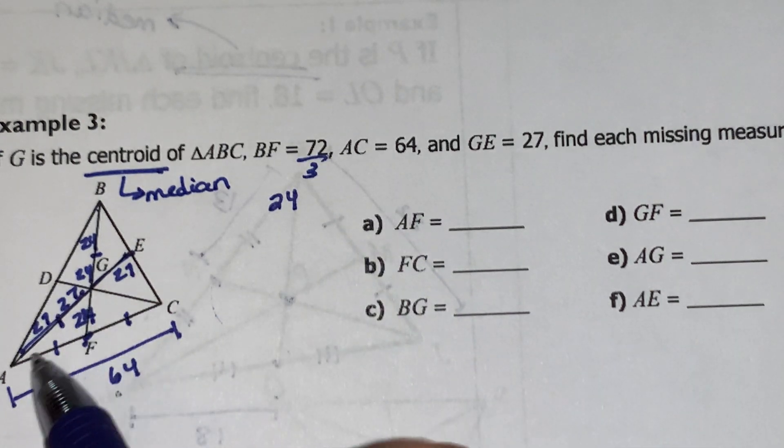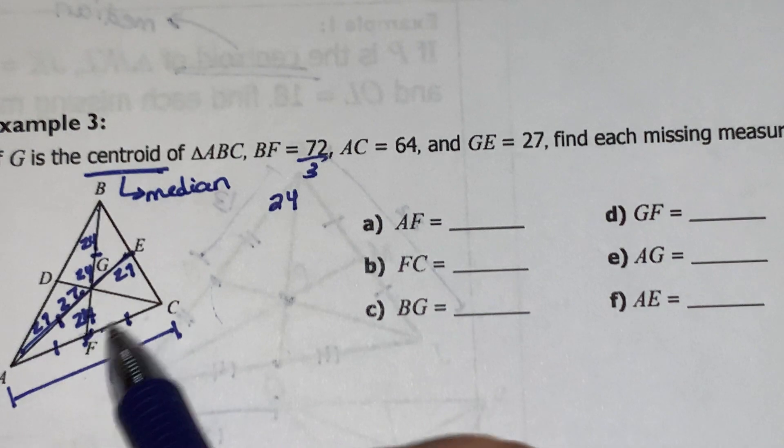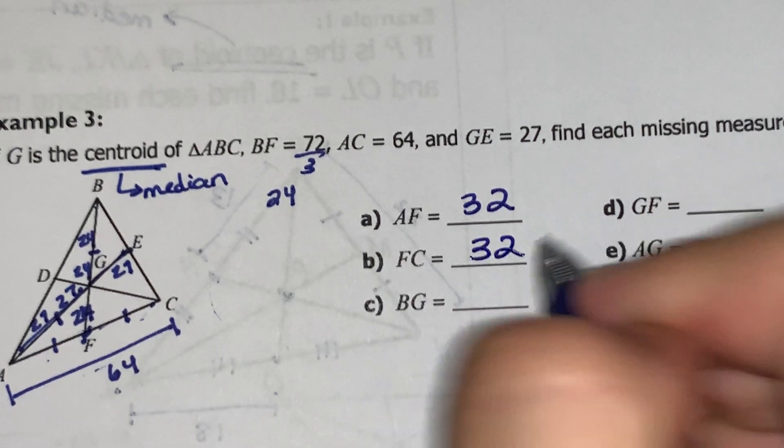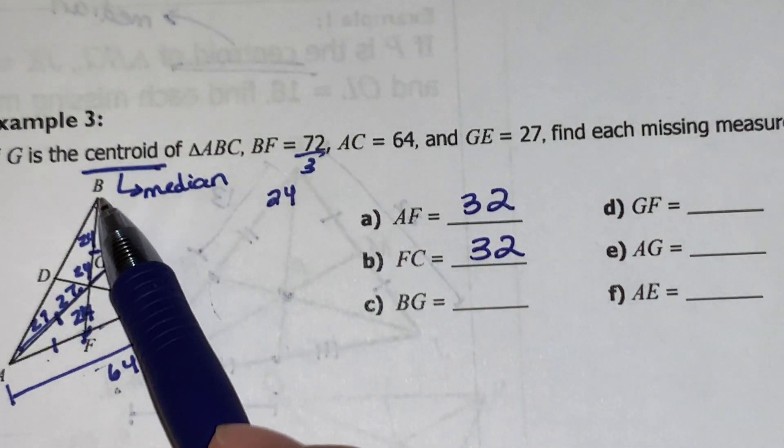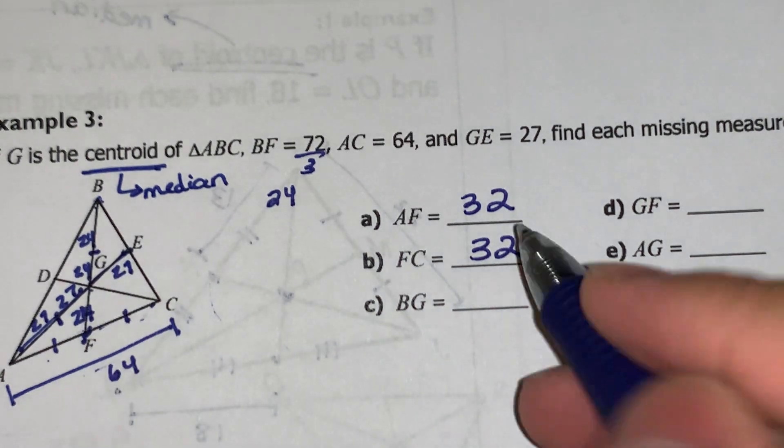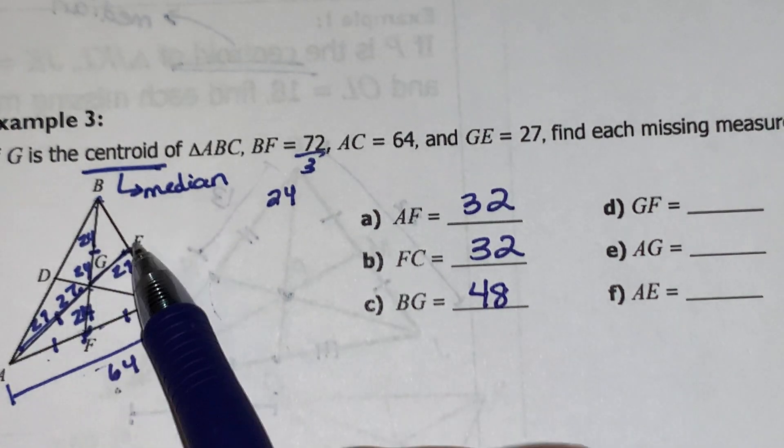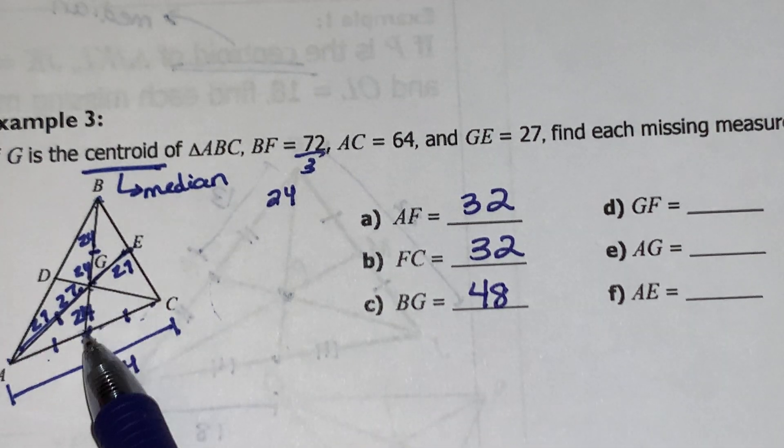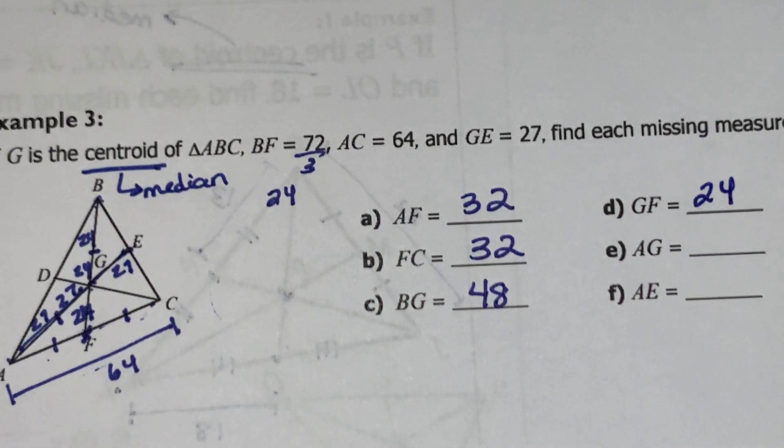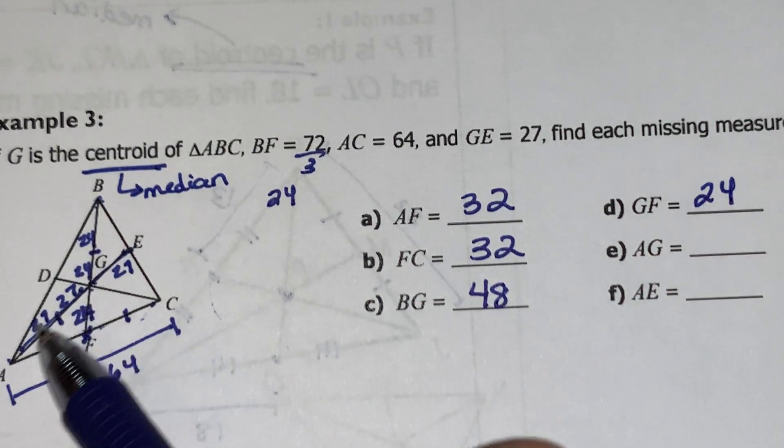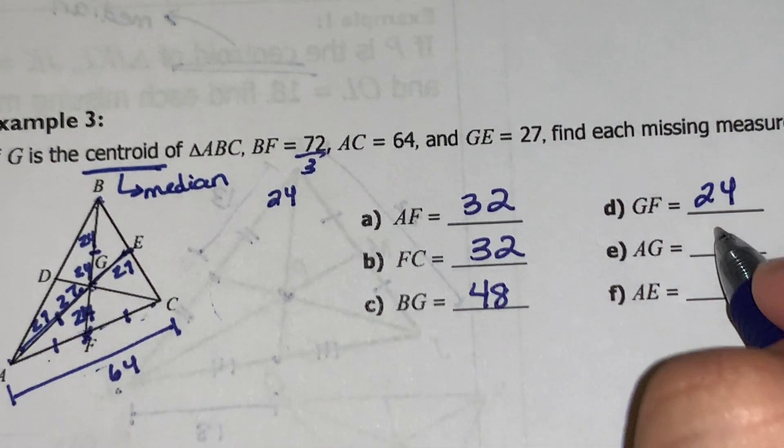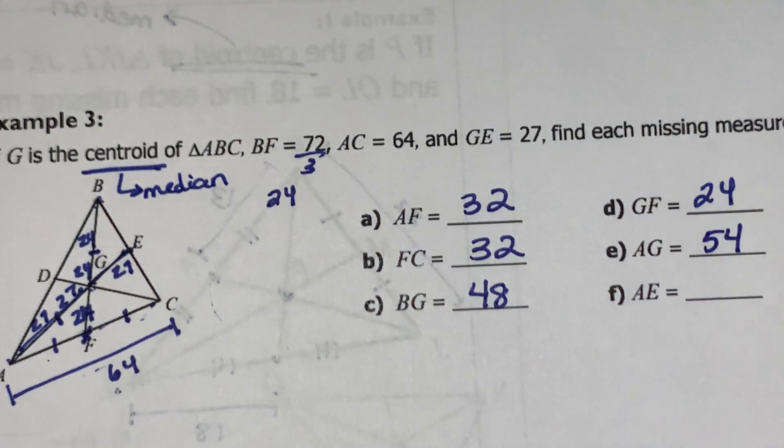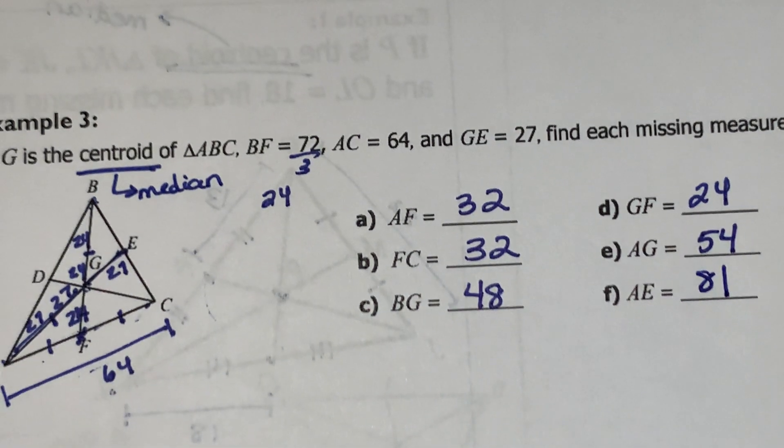If I want to know the length of AF, well, AF is this. So remember, this is going to be congruent to this side. So if the whole thing is 64, then each of those is 32. And so is FC. Then BG, that's the length from the vertex to here. So 24 twice is 48. From G to F, that's going to be 24. I've lost track of where my letters are at. And then from AG. So from A to G, that's 27 two times. So that's going to be 54. And then from A to E, that's the length of the whole thing. So 27 times 3 is 81.